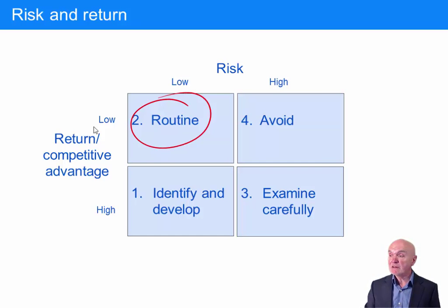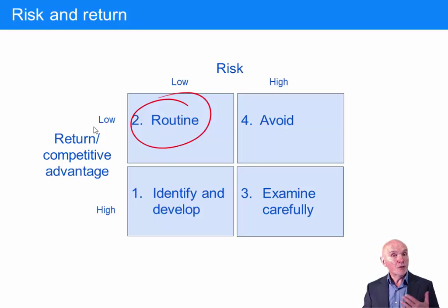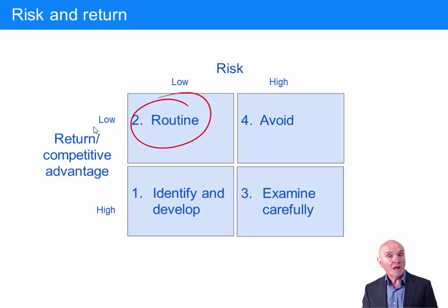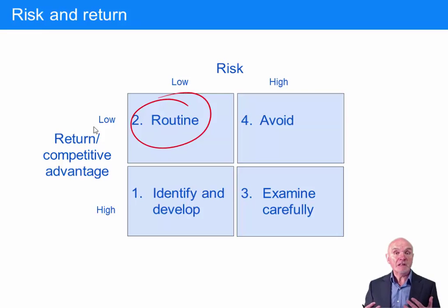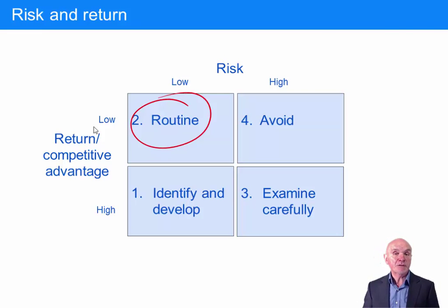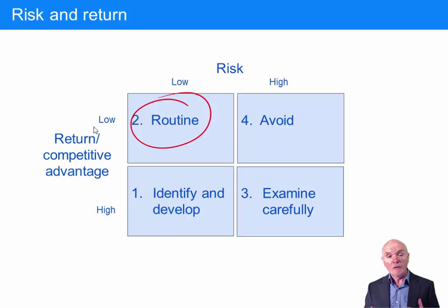For example, giving some small amounts of credit to a new customer — of course you're risking that the new customer may never pay you, but you control that. You get conformance by giving them a small credit limit to start with, and as they prove themselves credit-worthy, you increase it. This is just normal, everyday kind of business risk — low risk and low return.